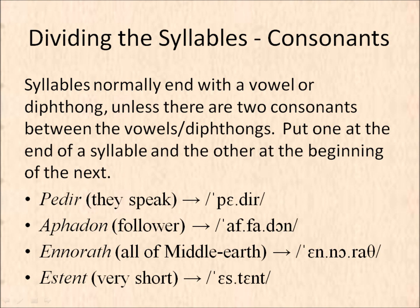Dividing the syllables: consonants. Syllables normally end with a vowel or diphthong, unless there are two consonants between the vowels or diphthongs — then you put one at the end of the syllable and the other at the beginning of the next. Some examples would be Pedir, Affadon, Ennora, and Estent.